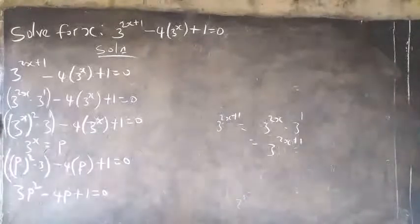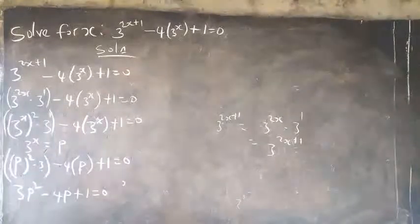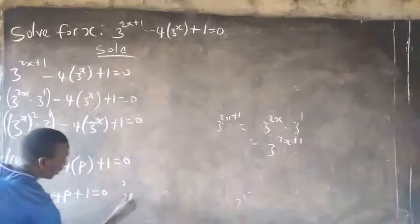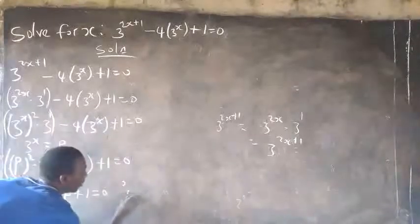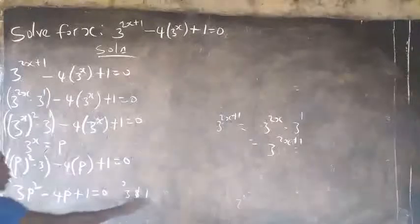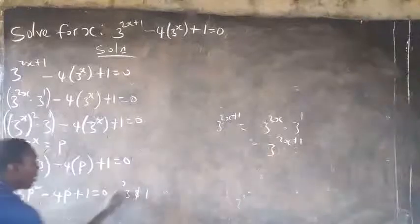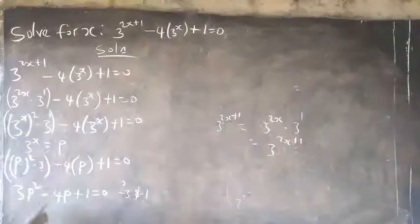I'll be looking for two numbers that multiply to give 3, and when added together give minus 4. If I choose minus 3 and minus 1: minus 3 times minus 1 gives 3, and minus 3 plus minus 1 gives minus 4. That is correct, so I'll make use of that.